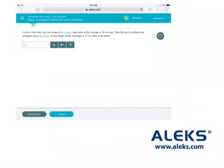Here is a new problem. A wire is first bent into the shape of a triangle. Each side of the triangle is 16 inches long. Then the wire is unbent and reshaped into a rectangle. If the length of the rectangle is 13 inches, what is its width?